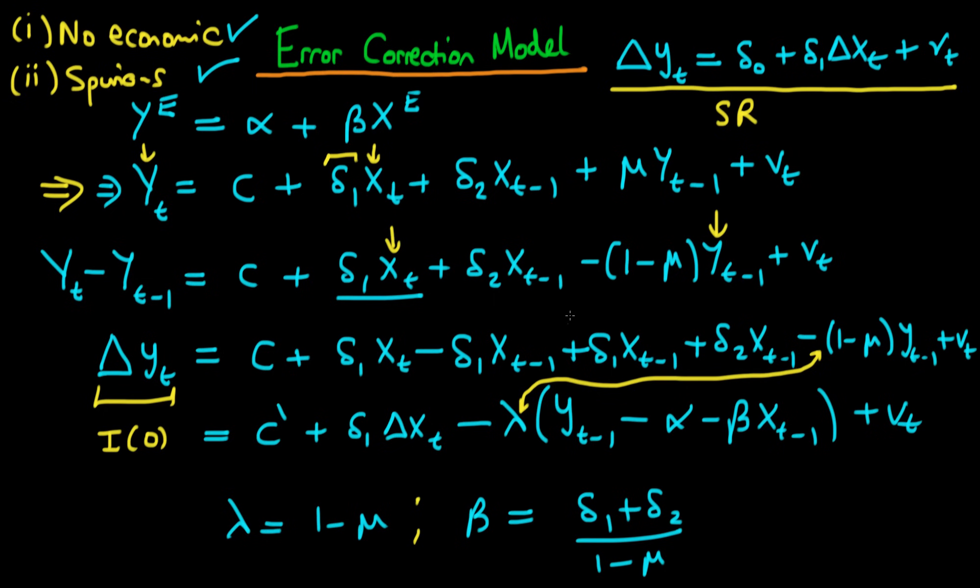And to see that you can just see here that in terms of the coefficients on xt minus 1 I've got a delta 1 plus delta 2 and then because I've put this lambda outside I've essentially got to divide through by lambda and we know that lambda is just 1 minus mu. So that's how we've got this particular relationship.